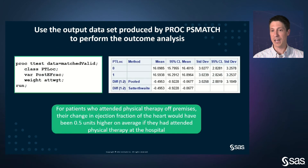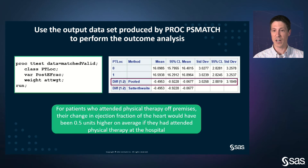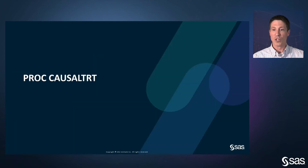PROC PS Match does not directly compute an outcome analysis. Using PROC T-TEST with the computed weights, the average weighted difference in the outcome variable is 0.5 units. Under the causal assumptions encoded in the graphical model, this difference has a causal interpretation: for patients who attended physical therapy off-premises, their change in ejection fraction of the heart would have been 0.5 units higher on average if they had attended physical therapy at the hospital. You can perform a similar analysis with PROC CausalTreat.